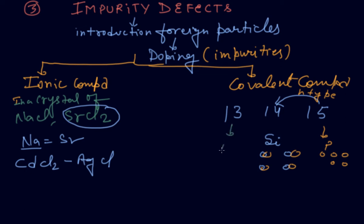In group 13, if we take aluminium, its valence is three. Three of the four silicon bonds are neutralized, and one bond is left incomplete. This creates a positive hole, and this is called a p-type semiconductor. One hole will be left, and this is the covalent compound impurity defect for the p-type.